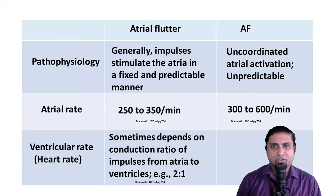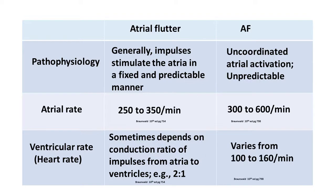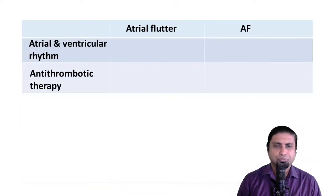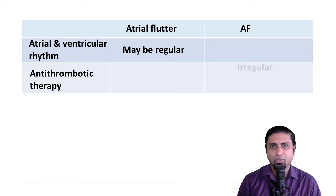In atrial fibrillation, such fixed conduction ratios never occur. The ventricular rate varies from 100 to 160 beats per minute. In atrial flutter, we often encounter situations where the atrial and ventricular rhythms are regular. Such a condition never arises in atrial fibrillation. In fact, the hallmark of atrial fibrillation is an irregularly irregular pulse.